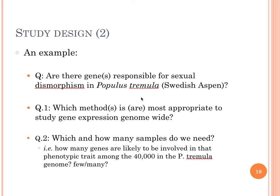As an example of how this should proceed, imagine that we have a question: are there genes responsible for sexual dimorphism in Populus tremula? Here, dimorphism is, for example, how the Aspen tree Populus tremula will use its resources differently based on its sex. You could imagine that a male tree would like to grow bigger so that it can spread its pollen further away, whereas a female tree would like to have stronger defenses so that she can protect herself and her progeny.